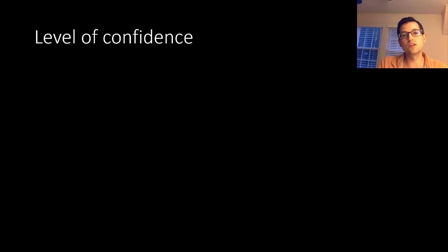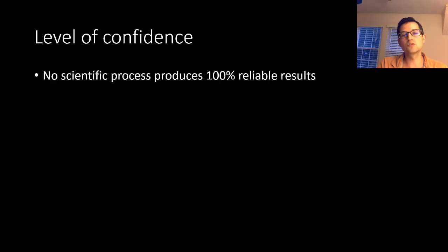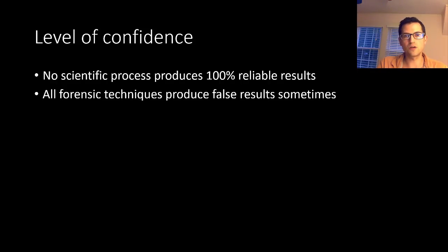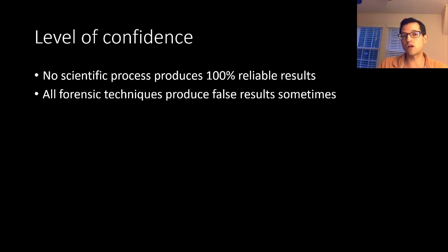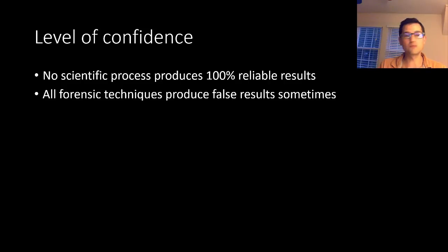Level of confidence is a really important idea to discuss at the beginning of this course. No scientific process produces 100% reliable results. There are always false results sometimes, and this includes forensic techniques. By false results we mean false positives — meaning a forensic test showed that a person was linked to a crime even though they really weren't — as well as false negatives, meaning a forensic result showed that a person was not involved in a crime even though they really were.